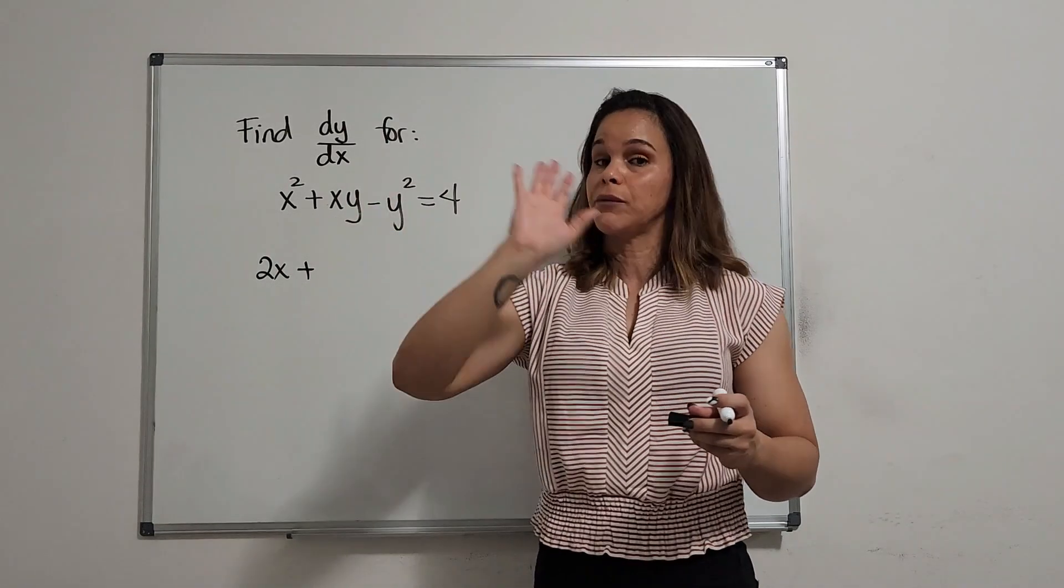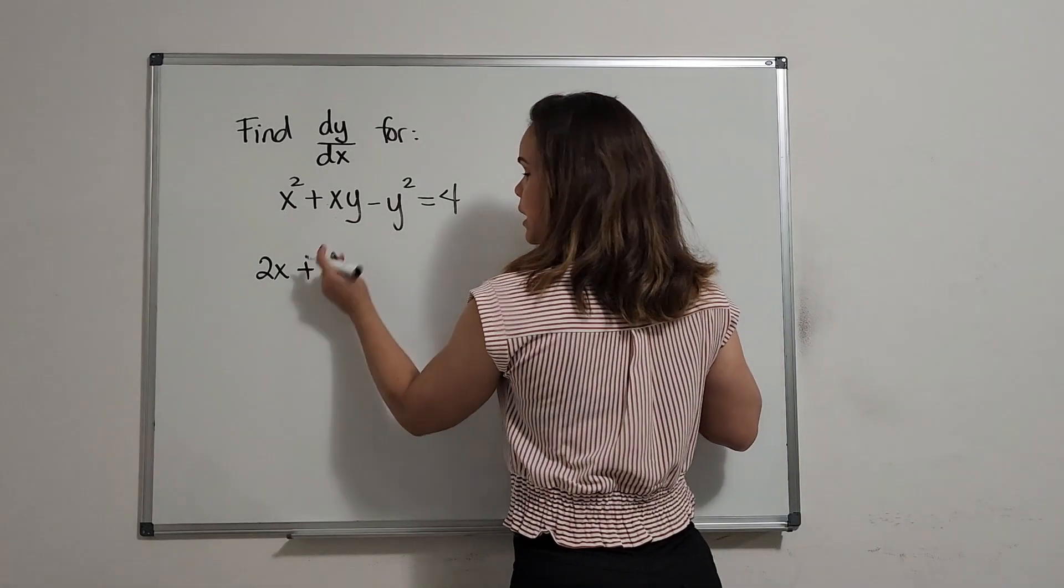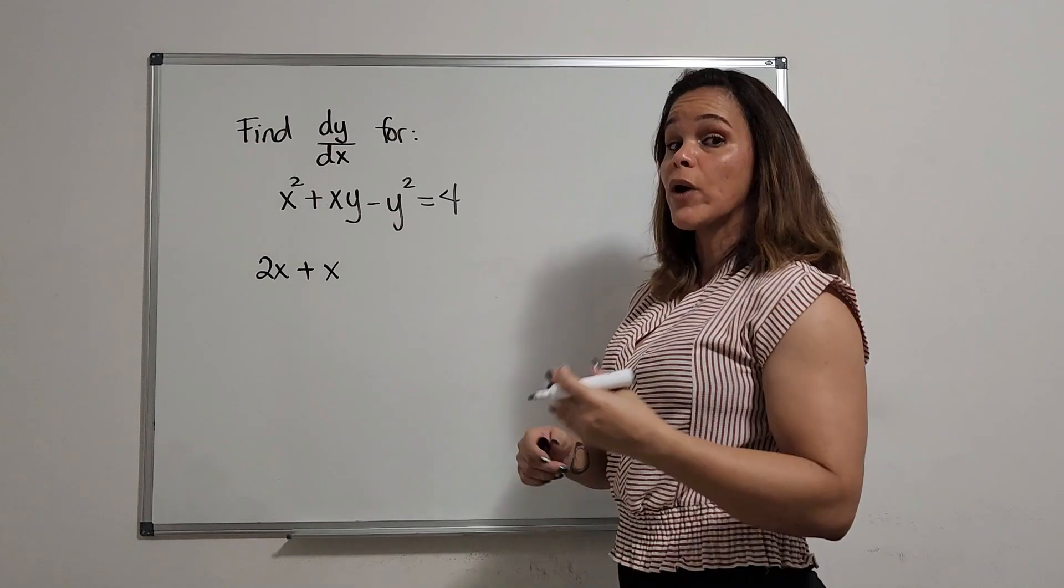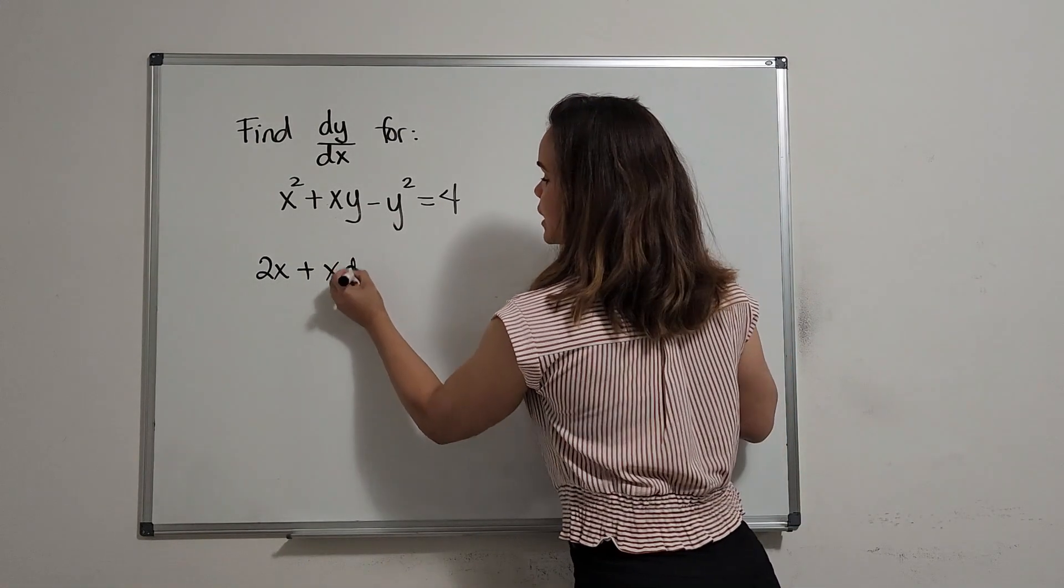The first times the derivative of the second, plus the second times the derivative of the first. And the derivative of x is 1, but we put the last name dy dx. First name and last name.